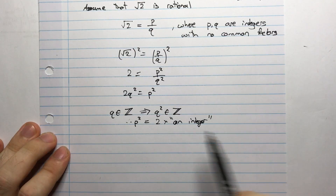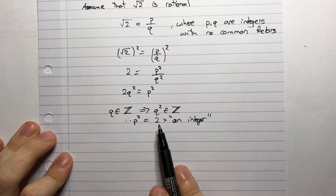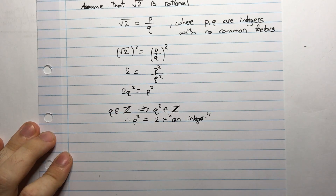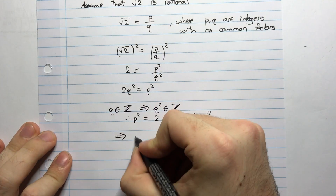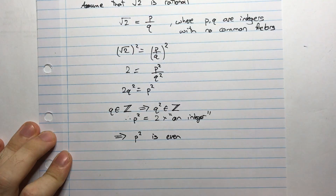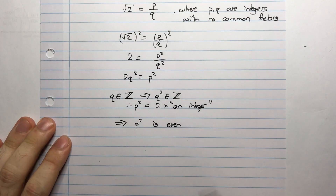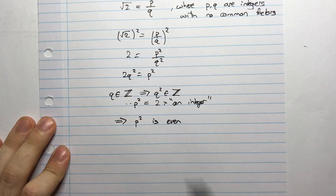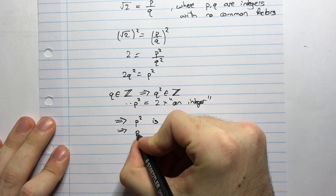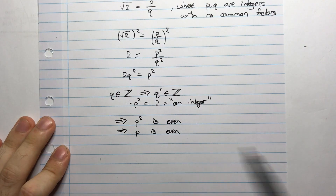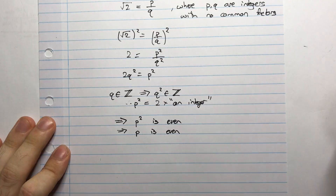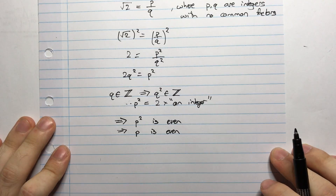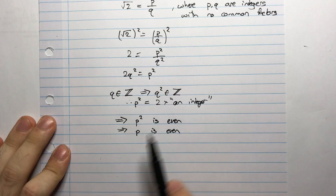Now, if p squared is even, that means p itself is even. Why? If p were odd, then p squared would be odd times odd, which is also odd. So the only way p squared can be even is if p is even. Since p is even, I can write p equals 2m where m is an integer. Substituting back: 2q squared equals (2m) squared, which gives 2q squared equals 4m squared, and dividing by 2 gives q squared equals 2m squared.